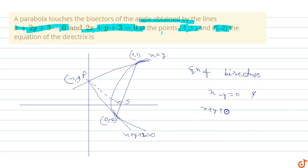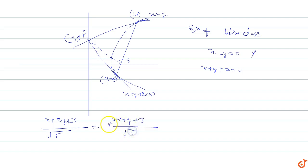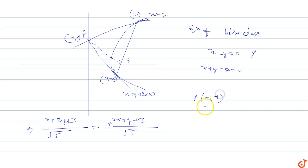And x+y+2=0. In this equation, one bisector has a plus sign and the other a minus sign. The equation of the bisector is given by (x+2y+3)/√5 = ±(2x+y+3)/√5. The bisectors intersect at the point (-1,1), so point P has coordinates (-1,1).